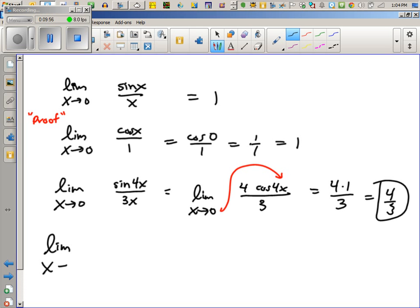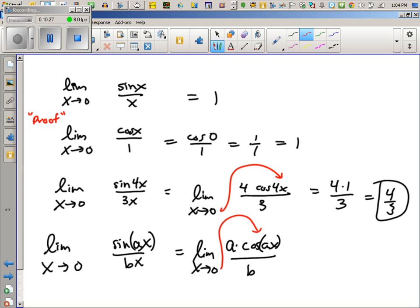So what about this? Limit as x goes to 0, sine ax over bx. What do you think this is going to come out to? A over b. A over b is correct. Yes. Because the derivative at the top, when you take the derivative at the top, you're going to get cos ax times the derivative inside a over the derivative at the bottom, which is just b. And upon plugging in 0, this part's going to go to 1. So you just end up with a over b.